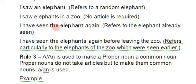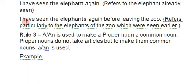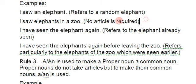Example: 'I have seen the elephant again' — here 'the elephant' means the specific elephant that was seen the first time. When we see it again, it becomes particular, identified — so we use 'the'. Similarly, 'I have seen the elephants again before leaving the zoo' — these elephants are particular because we had already identified them.